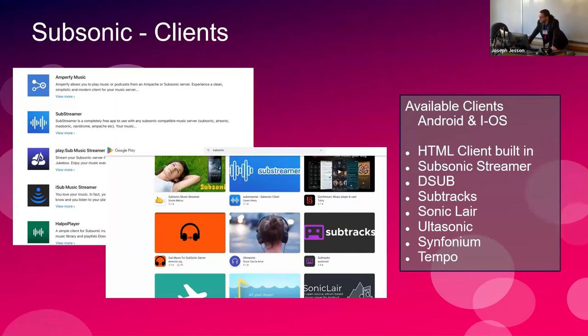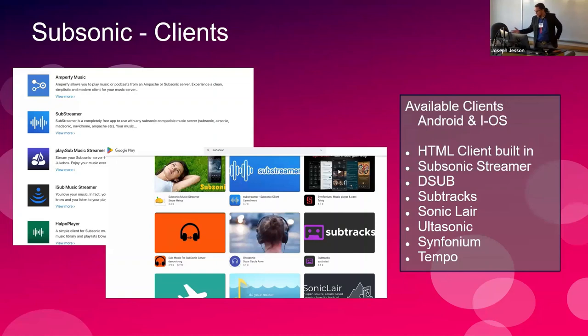These are just exploded views of the Google Play Store and the Apple App Store — a quick selection of the number of client software available. I'll point out Tempo, which I recently started using. It seems to be the best one at the moment. It's not on either of these stores — it's a GitHub project and they're doing some really cool things with it. I've been using this stuff for over 10 years and they're all great. I change the client I'm using probably once every six months.